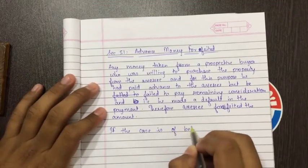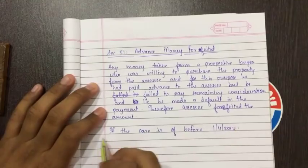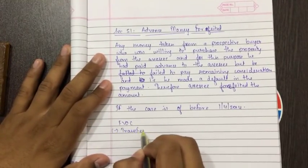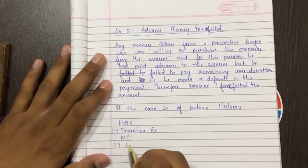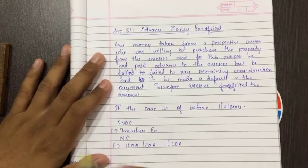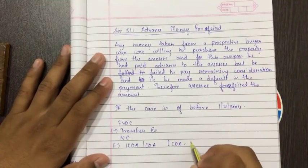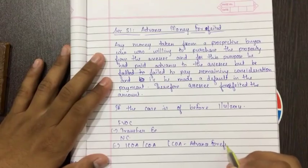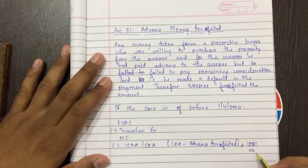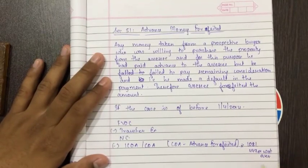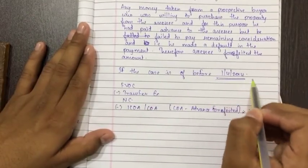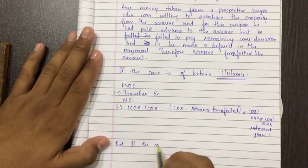So how to calculate it? If the case is of before 1-4-2014, then how to solve it? Then it will be FVOC less transfer expenses, net consideration, less index cost of acquisition or cost of acquisition. In case of index cost of acquisition, how to get it? The cost of acquisition at the date he has purchased less the amount he has forfeited - advance forfeited. And the amount that will come into 1081 divided by whichever the year it was, assuming it 447 or whatever relevant year. So this is the pattern of doing if it is before 1-4-2014.